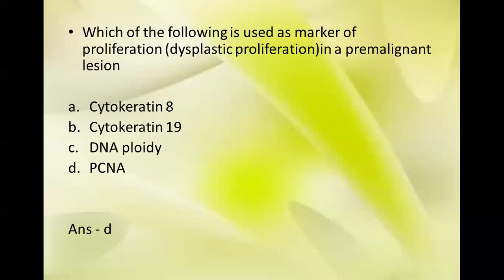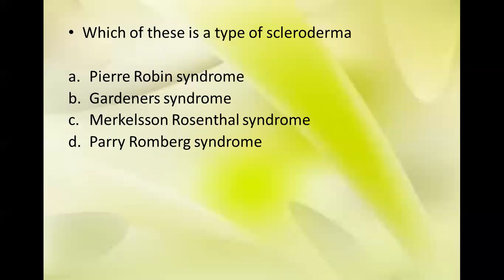The answer is D, PCNA. The next question: which of these is the type of scleroderma? Options: Pierre Robin syndrome, Gardner syndrome, Melkersson-Rosenthal syndrome, Parry-Romberg syndrome. The answer is D, Parry-Romberg syndrome.